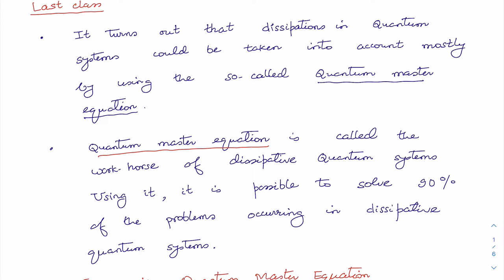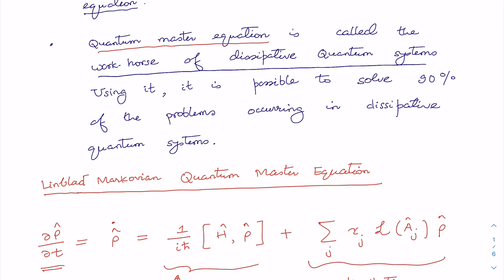In the last class, we discussed the quantum master equation, which is the workhorse for dissipative quantum systems. Almost 90% of problems in quantum dissipative systems can be taken into account by this equation. It is also known as the Lindblad Markovian quantum master equation. It is Markovian because the time derivative of the density operator at each point in time is given by the present state only — there is no memory.